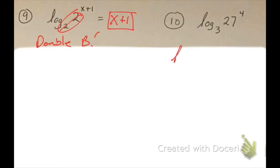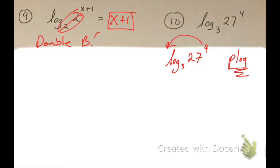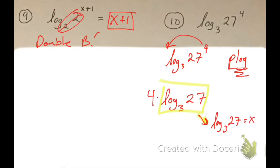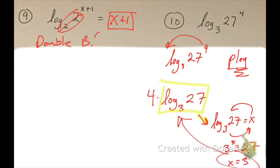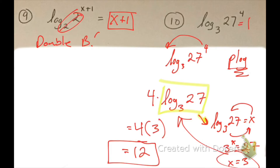Question 10: log base 3 of 27 raised to the power 4. I'm going to use the power rule — the reason I know to use it is because I have that exponent. Moving it to the front gives me 4 times log base 3 of 27. Solving the inner logarithm: log base 3 of 27 equals x, recycle, 3 to the x equals 27, and 3 cubed is 27 so x equals 3. Substituting back in, I get 4 times 3, which gives me 12.